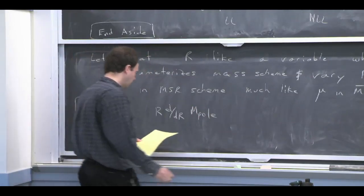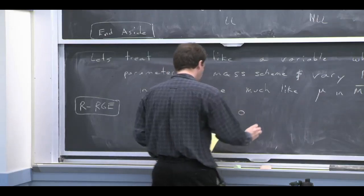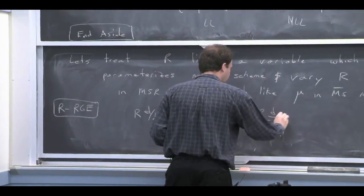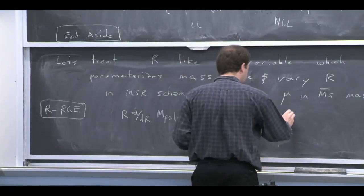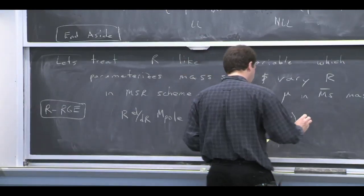So m pole didn't depend on R, so you get 0 for that. And if we just look at our scheme change formula, then we can figure out what the RG is.